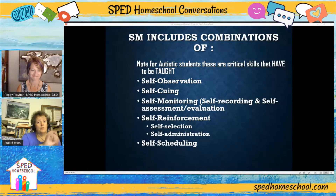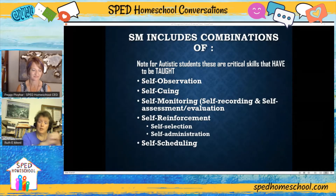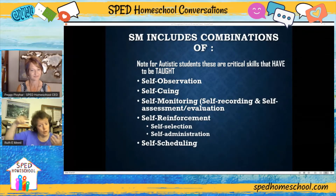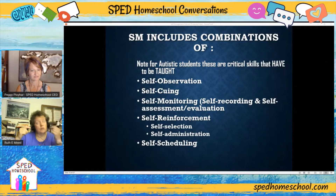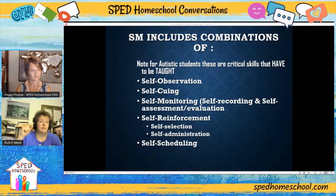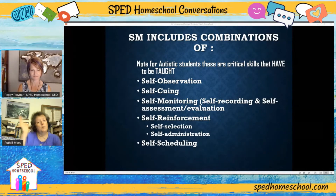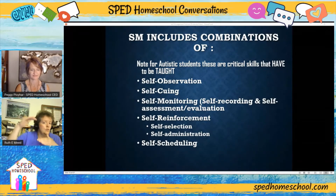Self-observation is: am I actually paying attention? Self-cueing is: I need to stop and pay attention now. Self-monitoring is the little checklist thing. Self-reinforcement is the different things you do to reward yourself for getting done what you need to get done — including your schedule.